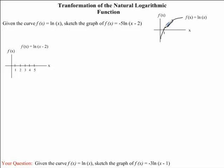This means for our new graph, we need to take every single point from the graph of ln x and shift them 2 units to the right. We notice that our x-intercept occurred at the point (1, 0). If we were to shift this 2 units to the right, our new x-intercept would occur at the point (3, 0).